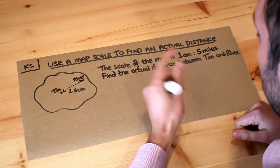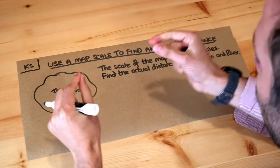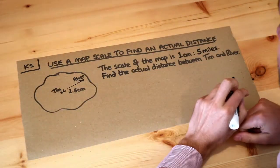Now often when you open a map it will give you some kind of scale to say what a distance on your map represents in real life.